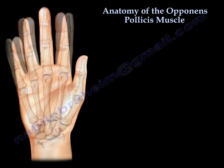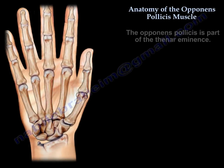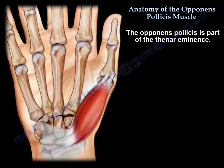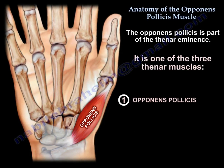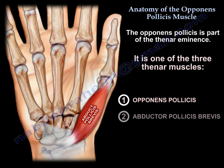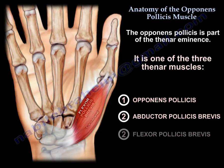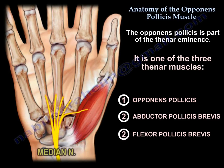The opponens pollicis is part of the thenar eminence muscles. It is one of the three thenar muscles: number one, the opponens pollicis; number two, the abductor pollicis brevis; number three, the flexor pollicis brevis. All three of these muscles are innervated by the median nerve.